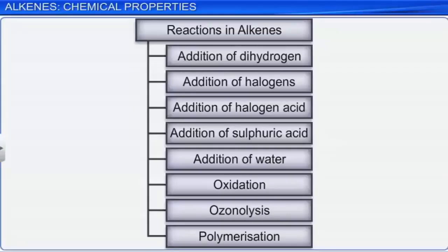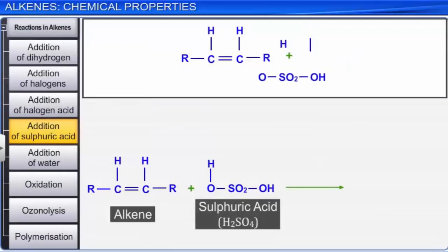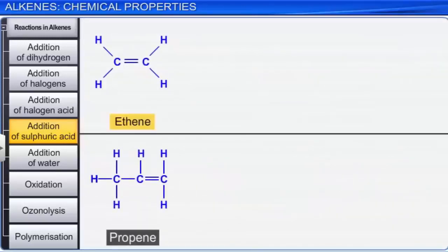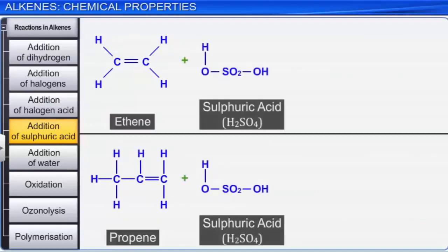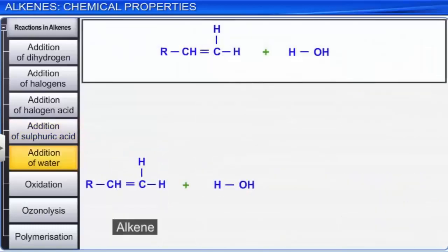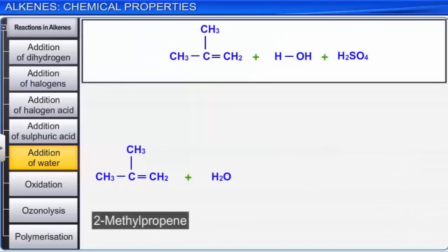Now let us move to the addition reactions of alkenes with sulfuric acid and water respectively. Alkenes react with cold concentrated sulfuric acid in accordance with Markovnikov's rule to form alkyl hydrogen sulfates. For example, ethene and propene react with cold concentrated sulfuric acid and form ethyl hydrogen sulfate and propyl hydrogen sulfate respectively. Alkenes also react with water in accordance with Markovnikov's rule. In the presence of concentrated acids like sulfuric acid, a water molecule adds to an alkene molecule across the double bond to form an alcohol. For example, 2-methylpropene reacts with water in the presence of concentrated sulfuric acid to form 2-methylpropan-2-ol.